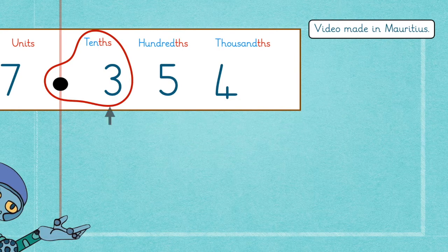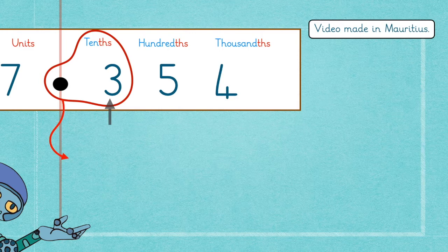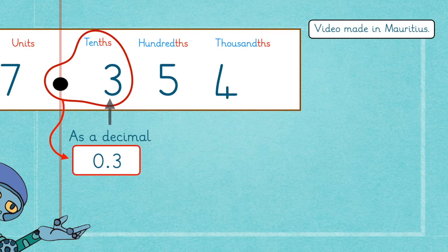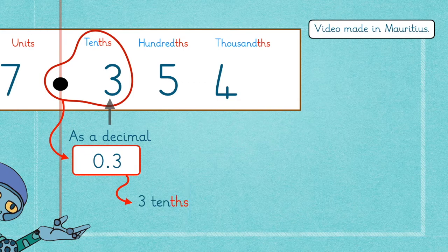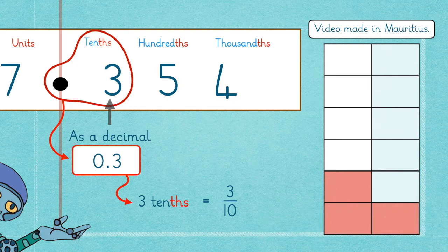The 3 tenths will be written in the decimal form as 0.3. So 0.3 is the same as 3 tenths, which is the same as 3 out of 10. Now yes, you're right, Eno.